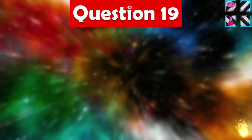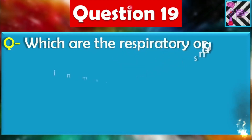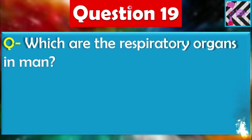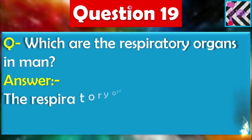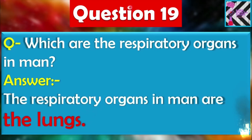Question number nineteen: Which are the respiratory organs in men? The respiratory organs in man are the lungs. As we all have one pair of lungs — all complex and higher organisms are having one pair of lungs. These are the main respiratory organs in man.